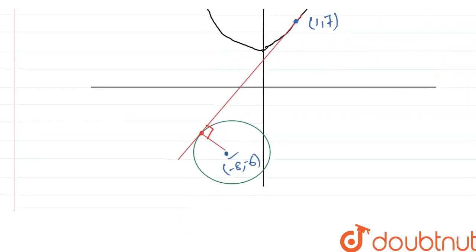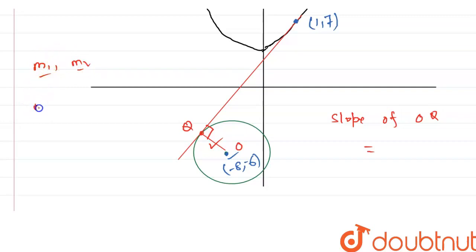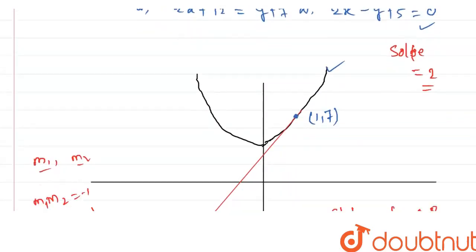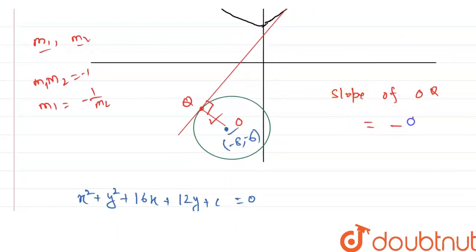Because this line is perpendicular to the tangent, the perpendicular line — let's call it OQ — has slope determined by: if M1 and M2 are the slopes of two perpendicular lines, then M1 · M2 = -1, so M1 = -1/M2. Because the slope of the tangent is 2 and OQ is perpendicular to the tangent, the slope of OQ is -1/2.